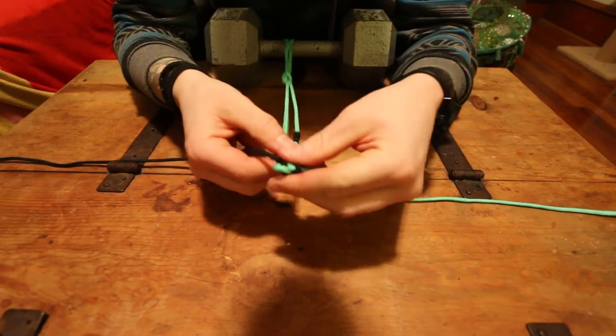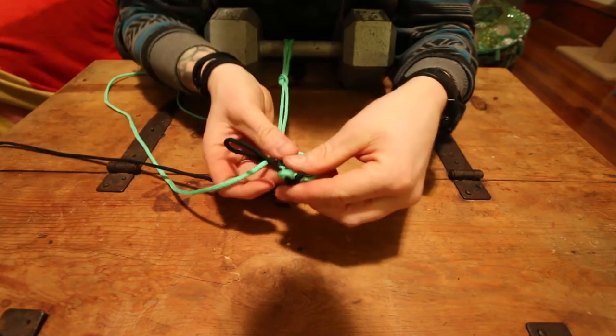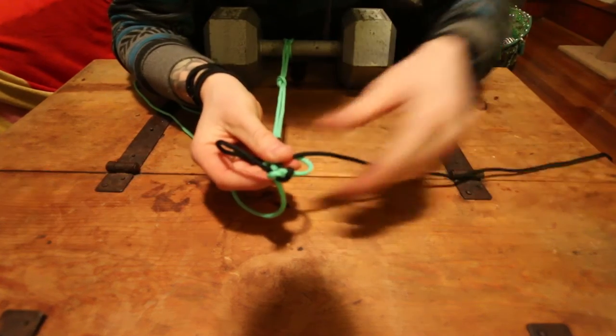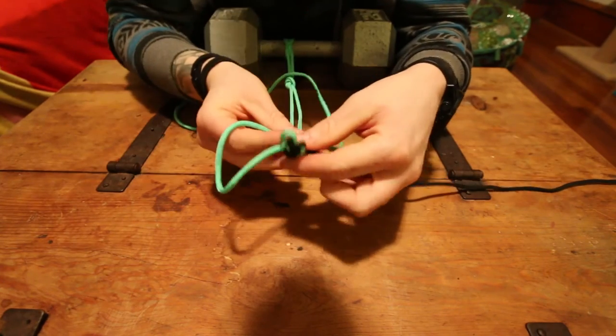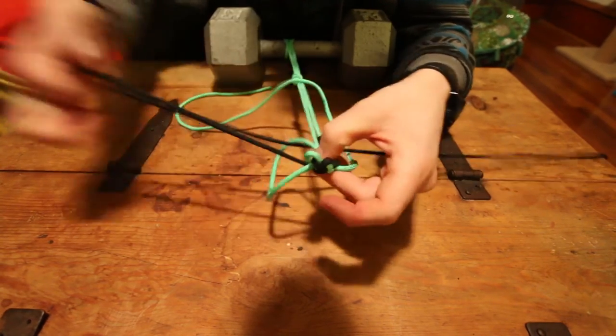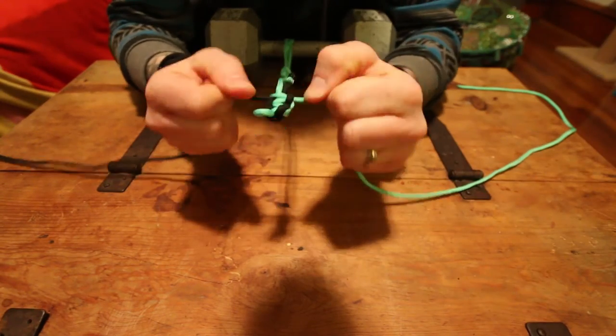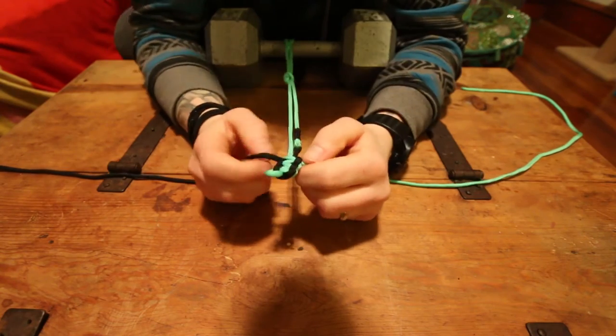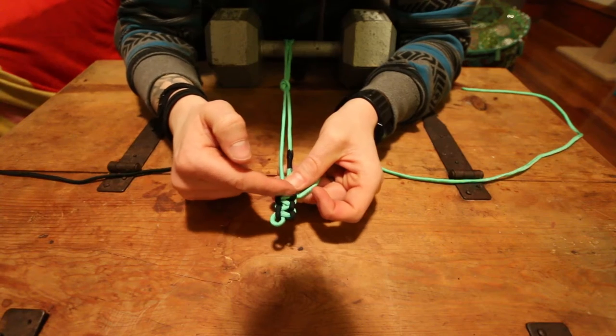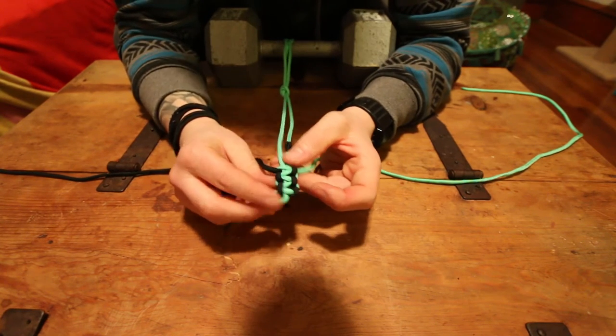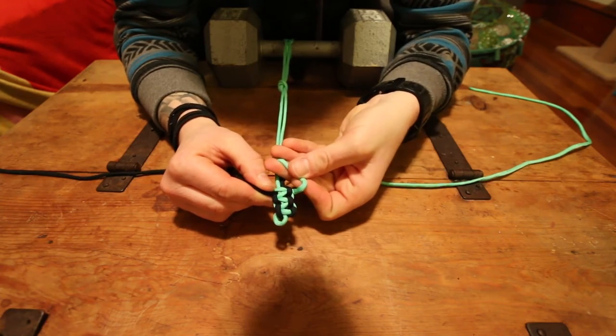You're going to notice after a while here, we're going to start getting a ladder work design. I'll get a few more knots in here, and then I'll show you that design. Now once you get the hang of doing this, you'll be able to easily do this while you're watching TV, relaxing. You can make these super quick, any kind of style bracelet too, not just these camera strap styles. Now if you can see, I have this zigzag ladder work forming. Now it's easy to tell if you messed up.